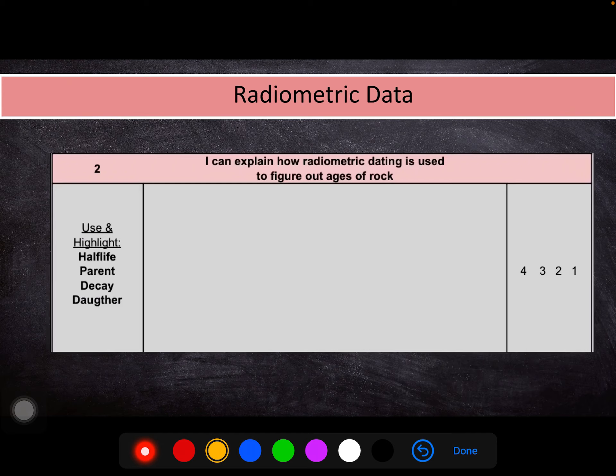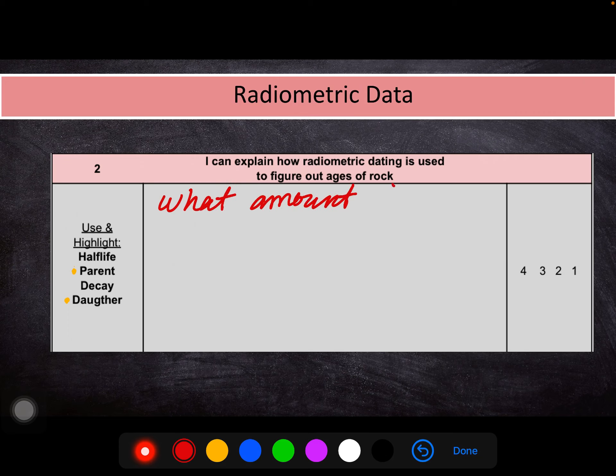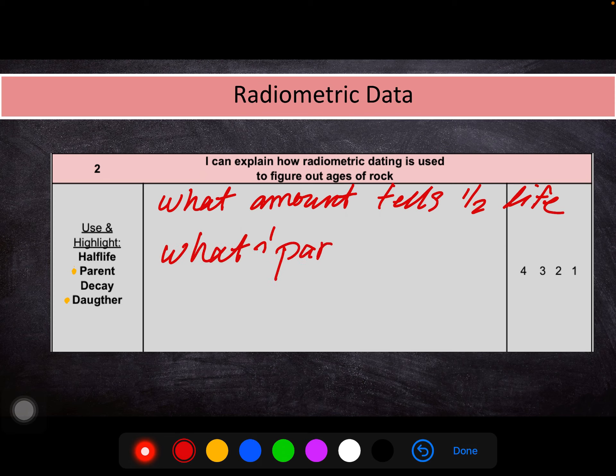So when you're looking at your learning target number two, we want to talk about that amount that is seen in parent and daughter. So what amount tells us half-life? And what is happening with parent?